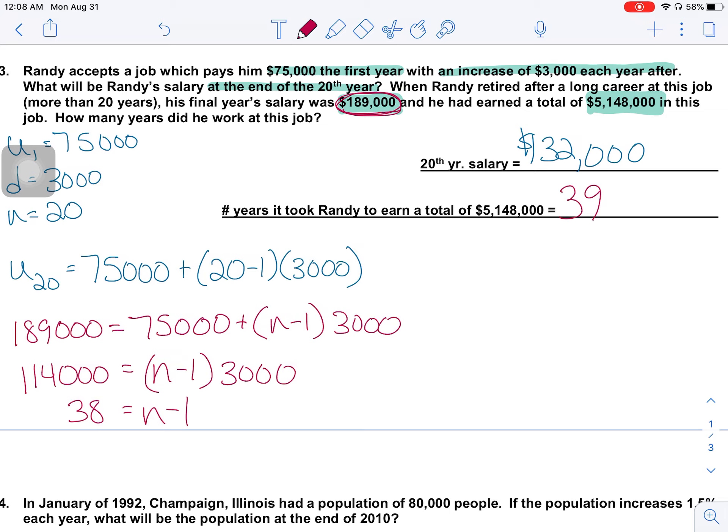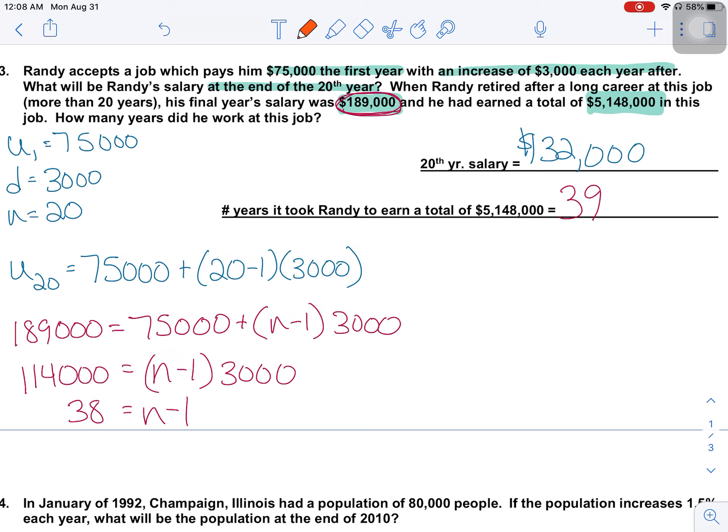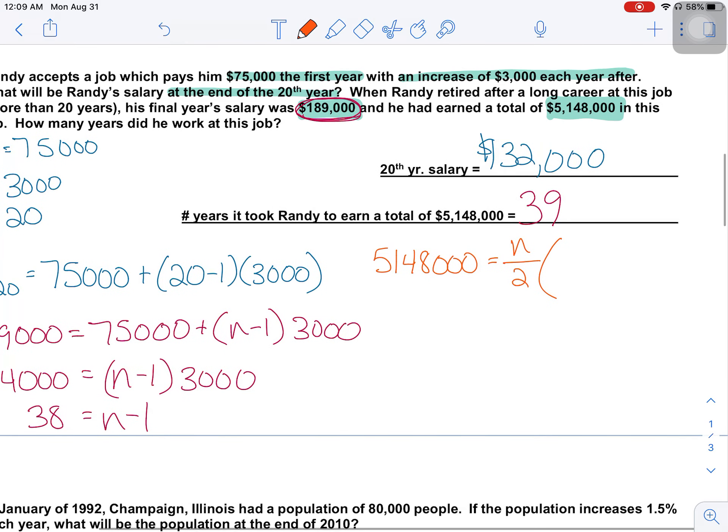But why did I give you this information about the $5,148,000? Because there's a secondary way to solve this. It really just depends on what you see when you read the problem. The other way to do this would be to say, well, if I know his total for every year that he worked, I could take that amount. So that's his partial sum for working, I don't know how many years. I know what he started with, $75,000. I know what he ended with, $189,000. And now I can solve for N.